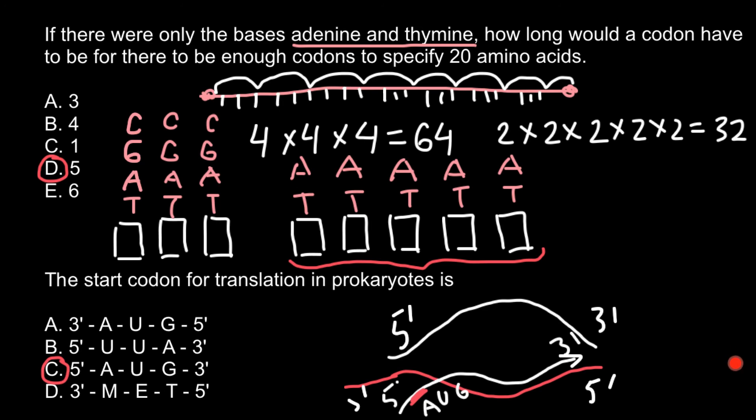Somewhere over here we would see the stop codon. Now I hope you have a better understanding of why we have 64 combinations of codons that code for the 20 amino acids. This is all for today. Thank you for your attention. Please subscribe for my new videos that I post almost every day. Thumbs up if you like this video, please write your comments and questions if you have any. See you in the next video. Goodbye.